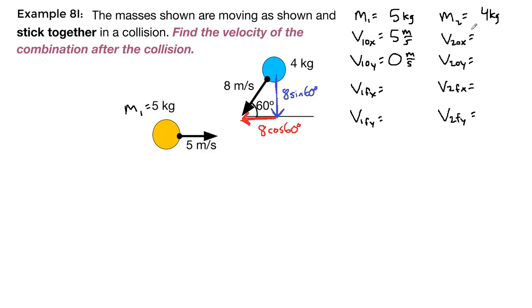So at the beginning of the problem, we have these two pieces of information. The 8 cosine 60 degrees is the x component. It's 4.0 meters per second, but it's pointing to the left, so we have to call it minus because we've already decided that the to the right direction is positive.